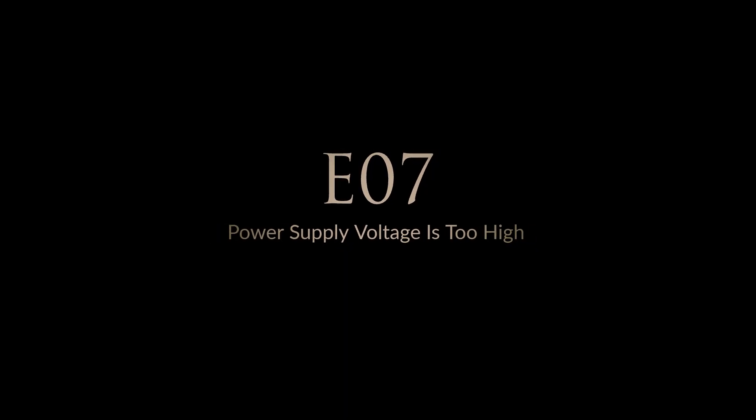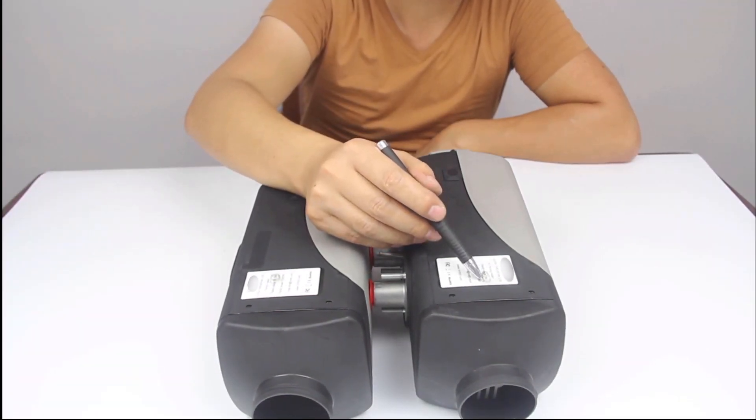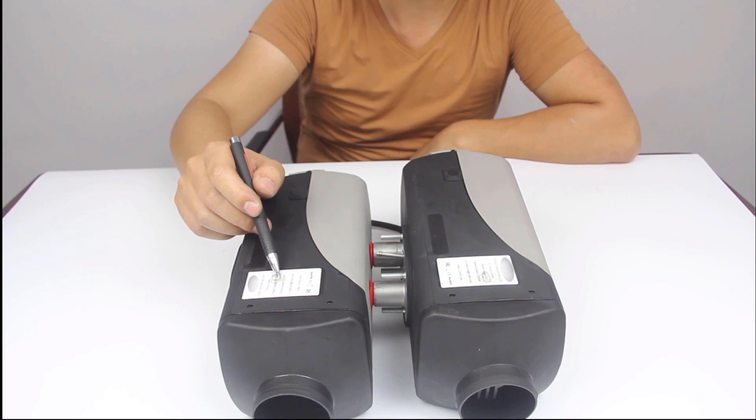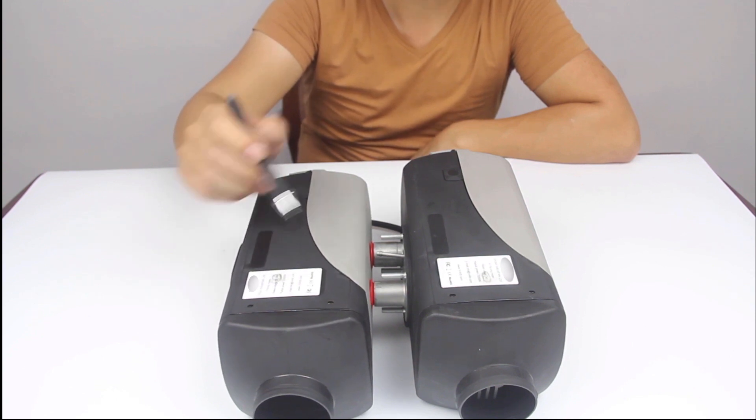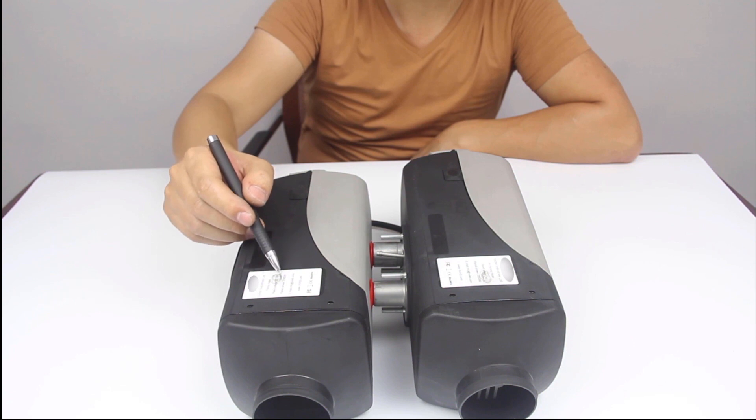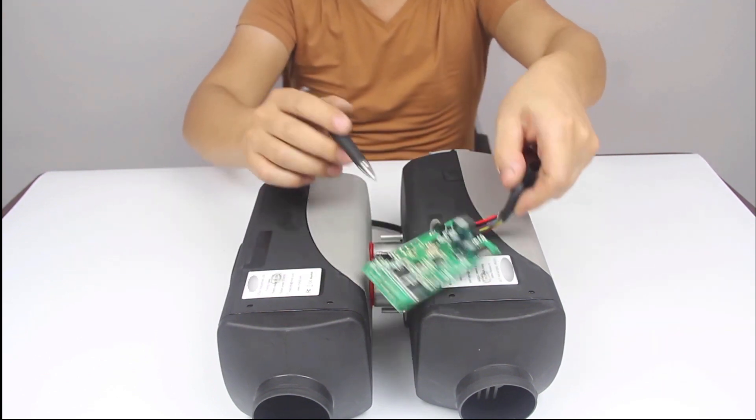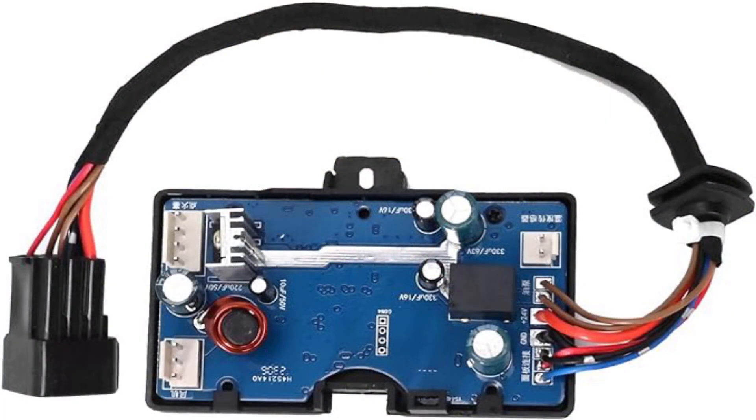Error code 7, the power supply voltage is too high. To resolve error 7, it is necessary to inspect three specific locations. Please note that this task may pose challenges, as past experiences indicate that not all Chinese diesel heaters have been accurately labeled. First, ensure that the voltage of the heater matches both the battery and the vehicle. If the heater is installed in a vehicle, also confirm that the alternator output is not excessively high for the heater. Thirdly, check the circuit board to make sure that it is not broken.